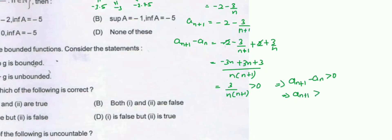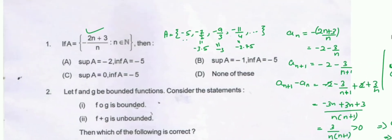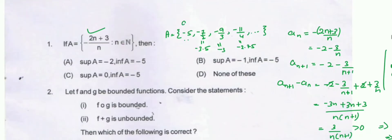This implies a(n+1) is always greater than aₙ for all n belonging to natural numbers. So a₁ < a₂ < a₃ < a₄, and so on. This means the sequence is increasing. So the infimum of a is a₁ = minus 5.